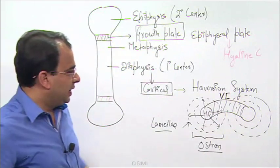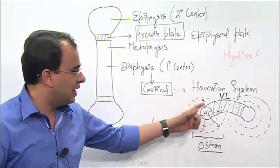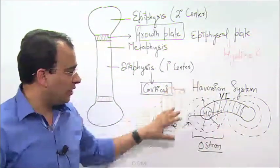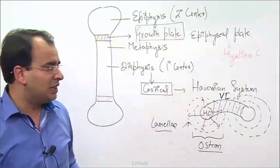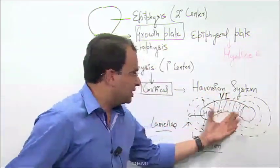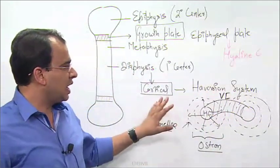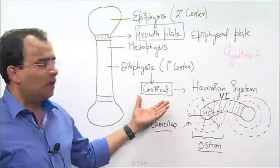You can see there is a haversian canal, a haversian system in which we have these concentric lamellae where osteocytes are arranged in circular manner. We call them concentric laminae, and we have Volkmann's canal joining the two haversian systems together. This is how a cortical bone looks.